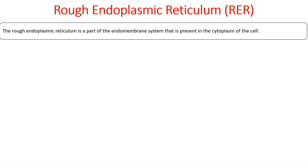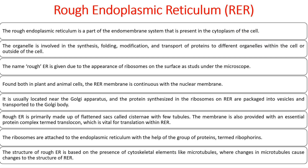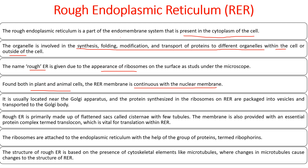In summary, rough endoplasmic reticulum is a part of the endomembrane system present in the cytoplasm. It is associated with synthesis, folding, modification, and transportation of proteins to different organelles within or outside the cell. It is named 'rough' due to the appearance of ribosomes on its surface. It is present in both plant and animal cells and is associated with the nuclear membrane because mRNA exiting the nucleus needs to travel only a short distance for protein synthesis.